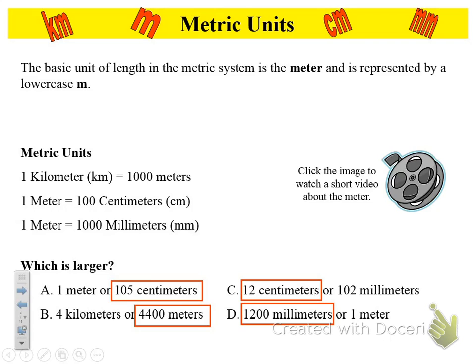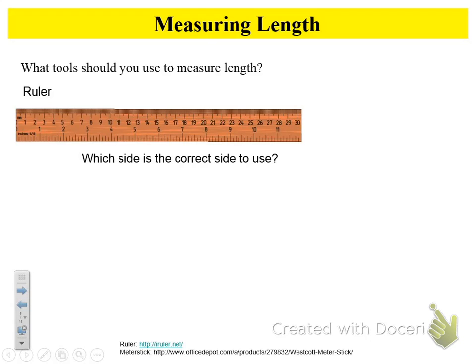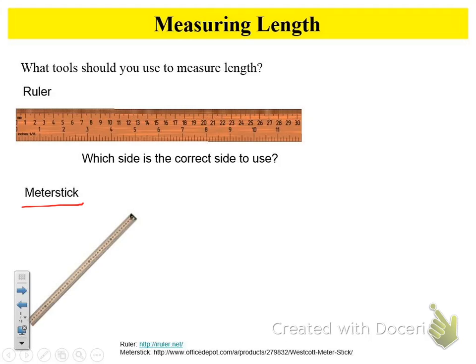Let's look at number eight. If I tell you to measure the length of something, you're going to use one of two things. A ruler — there's one. What's the other tool? A meter stick. Thank you for not saying yardstick — we are talking meters and metrics. So you're either going to use a ruler or a meter stick for number eight.